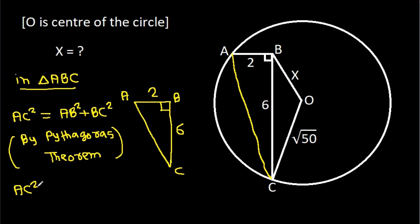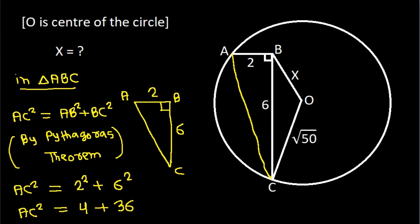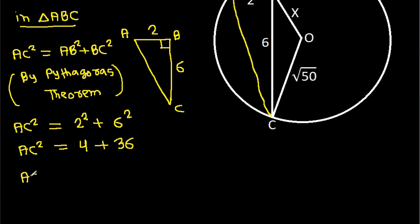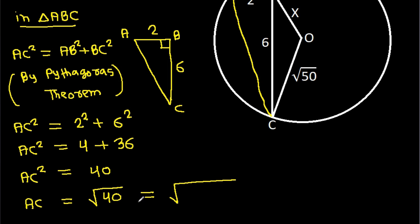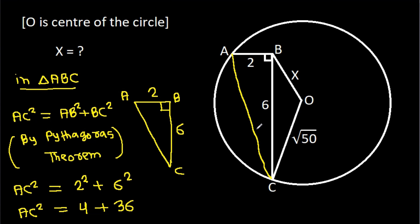So AC squared will be equal to 2 squared plus 6 squared, and AC squared is 4 plus 36. So we get AC squared is 40. So AC will be a square root of 40, and 40 is 2 times 2 times 10, so AC is 2 times a square root of 10.